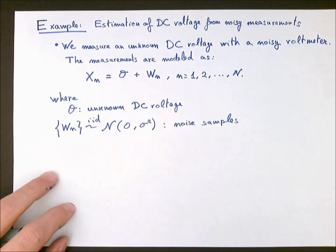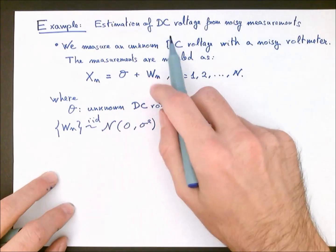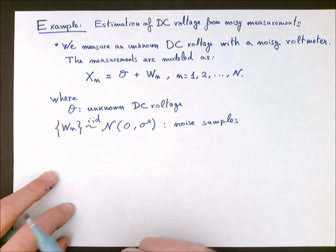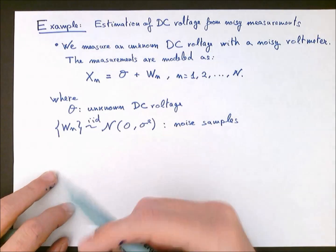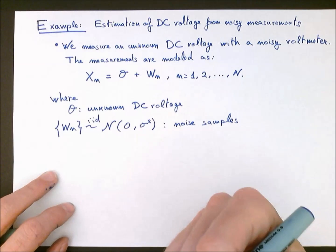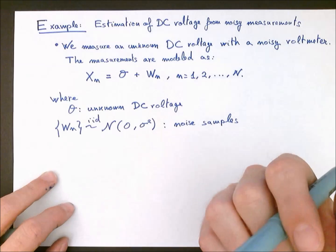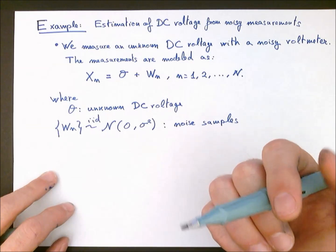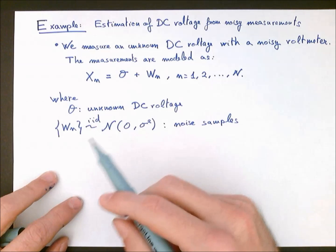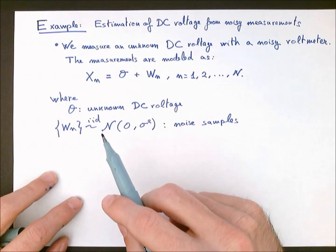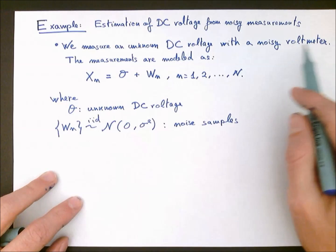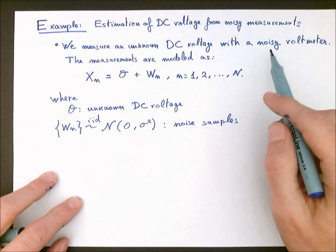The example we are going to see is that of estimation of a DC voltage from noisy measurements. Imagine that we would like to measure the value of a constant voltage which is unknown to us, and we only have at our disposal a voltmeter that is old or just bad and produces very noisy measurements.